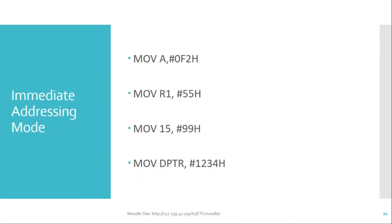The first mode is immediate addressing mode. An example instruction is MOV A, #0F2H. The hash symbol indicates that the value following it is data, so that data value is copied to the accumulator. Whenever an instruction contains the hash symbol, it means it has immediate data, making it an immediate addressing mode instruction.